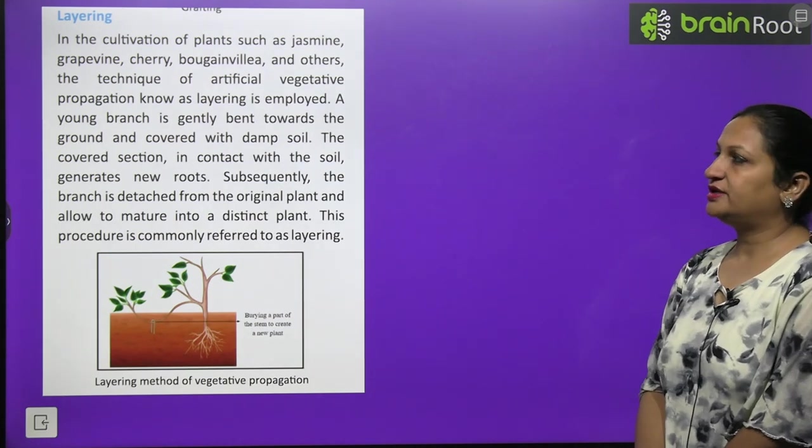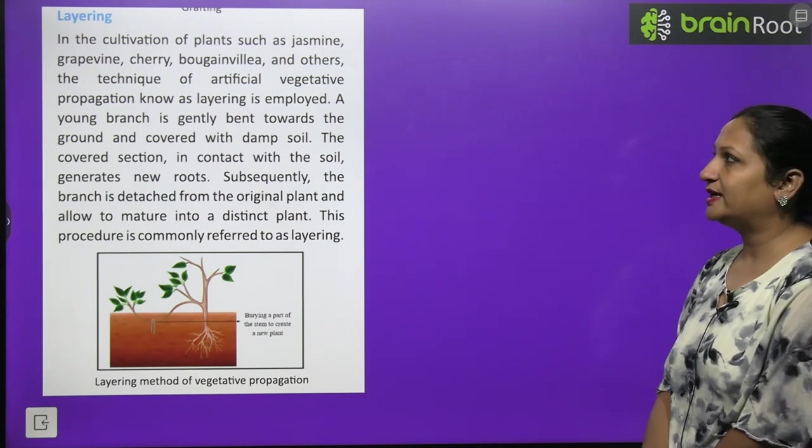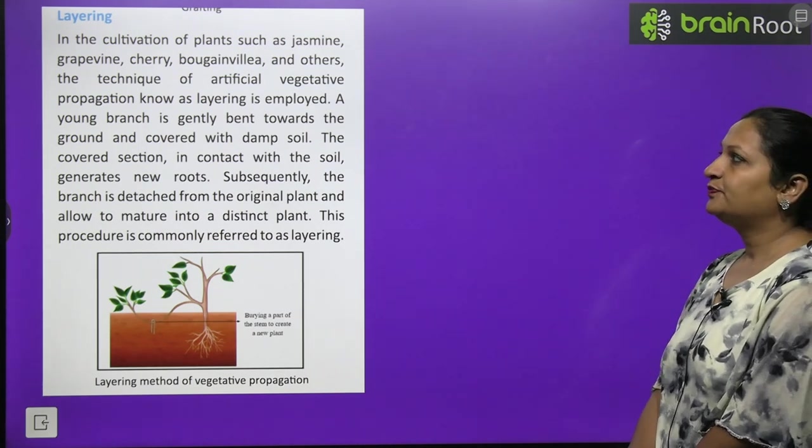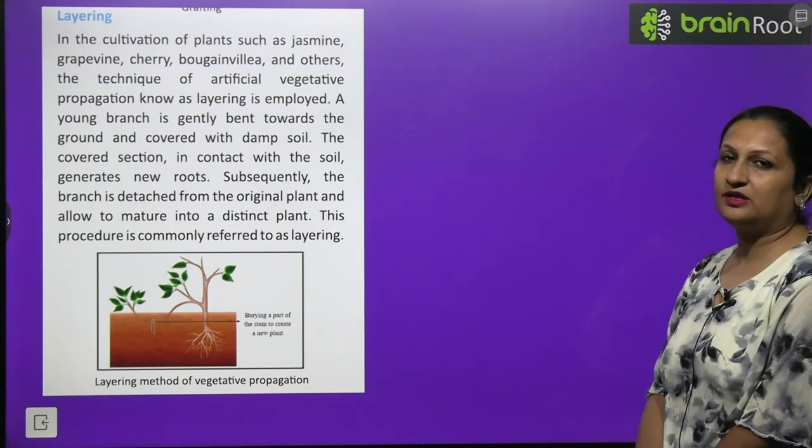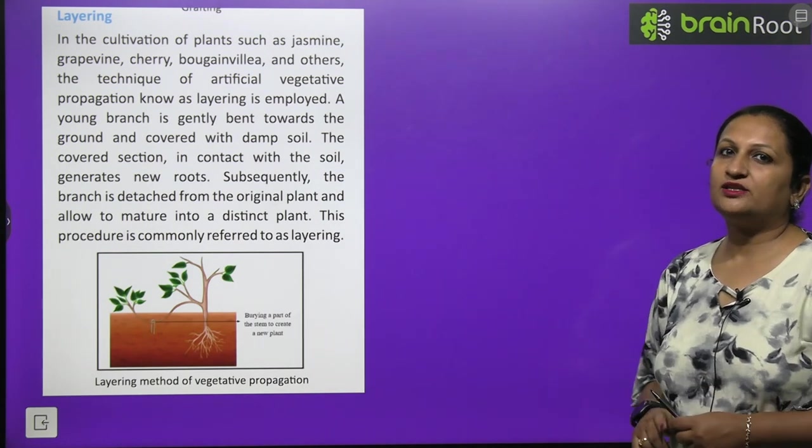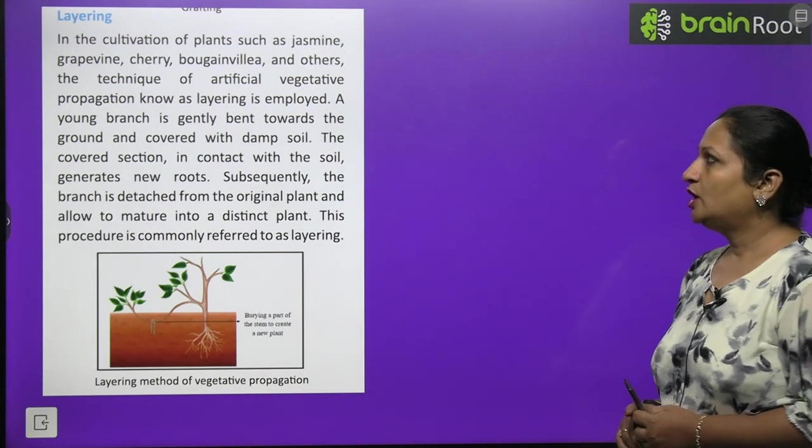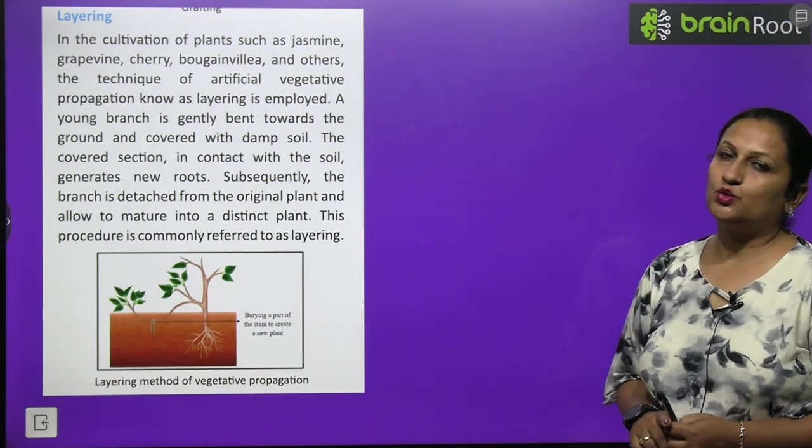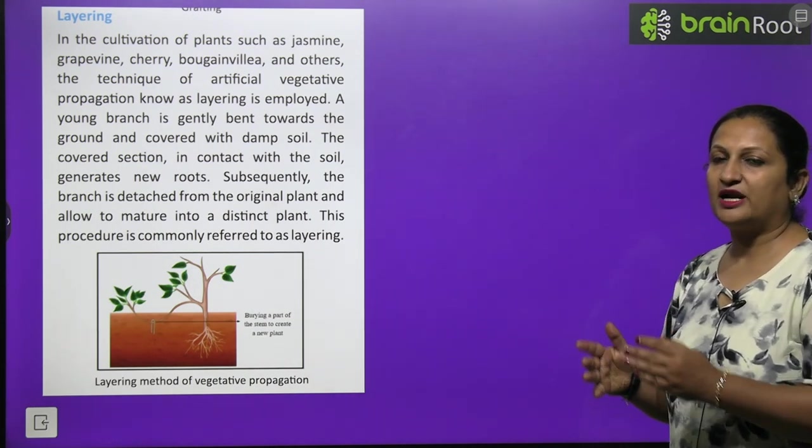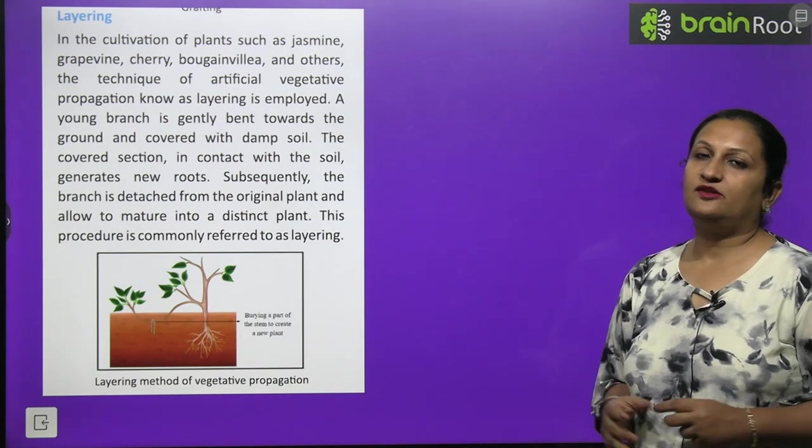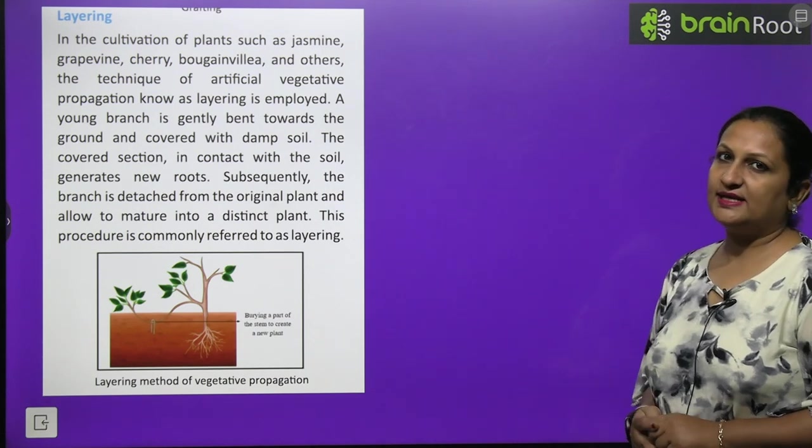Another method is layering. Layering we see in plants like jasmine, grapevine, cherry, bougainvillea and others. We can easily apply the layering method. The young branch is gently bent towards the ground. When it touches the ground, you cover it with damp soil. After a few days you will see that there will be new roots development. Subsequently the branch is detached from the original plant. This procedure is commonly referred to as layering.